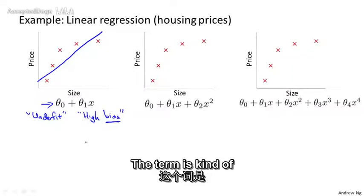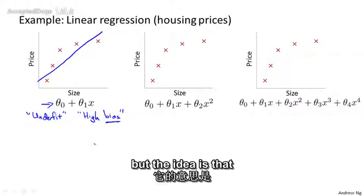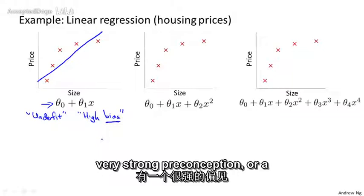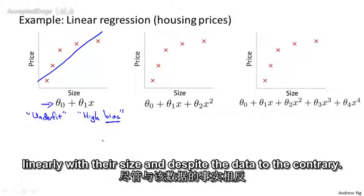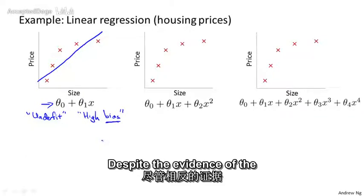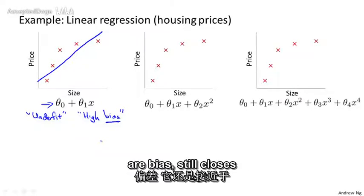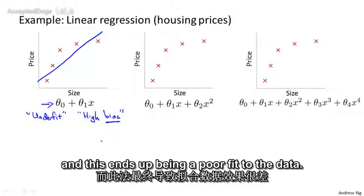Both of these roughly mean that it's just not even fitting the training data very well. The term bias is kind of a historical or technical one, but the idea is that if we're fitting a straight line to the data, then it's as if the algorithm has a very strong preconception or a very strong bias that housing prices are going to vary linearly with their size. And despite the data to the contrary, despite the evidence to the contrary, its preconceptions or bias still causes it to fit a straight line, and this ends up being a poor fit to the data.